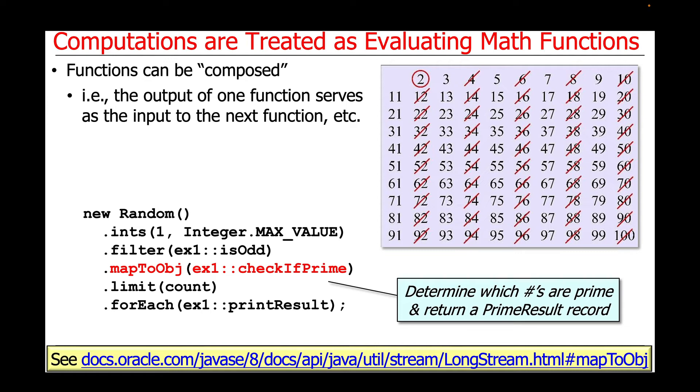and it will return a prime result indicating whether it was prime, in which case the value will be zero, or the smallest factor if it was deemed to not be prime. And this comes back in something called a record, which is a relatively new Java data type that can be used for pure data values.